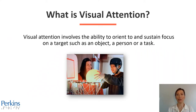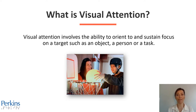Let's start with what visual attention means. Visual attention involves the ability to orient to and sustain focus on a target, such as an object, a person, or a task. On this slide, we have a photo of a high school student working on putting a large-sized lighted ball into a basketball hoop. He has his visual attention on the ball and fixates on the ball to complete the task.